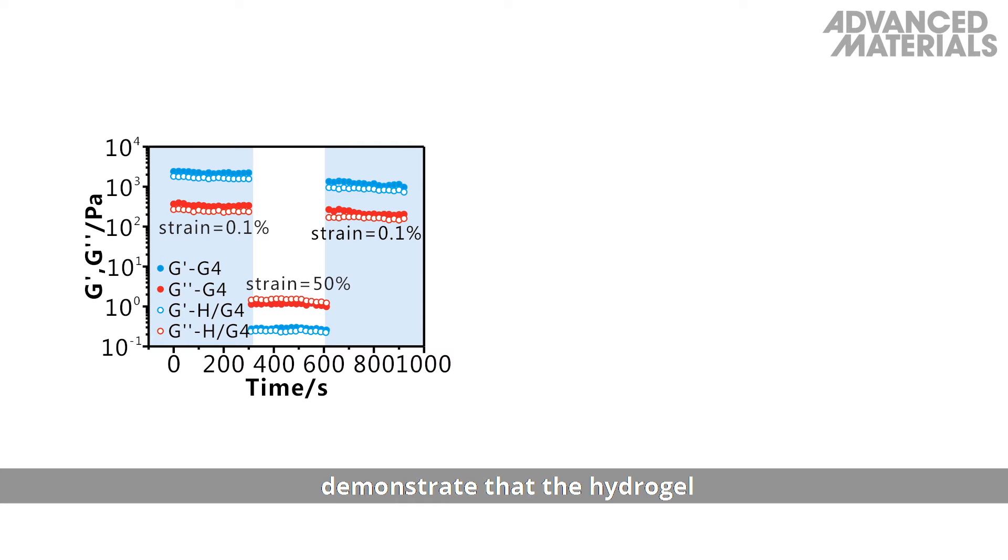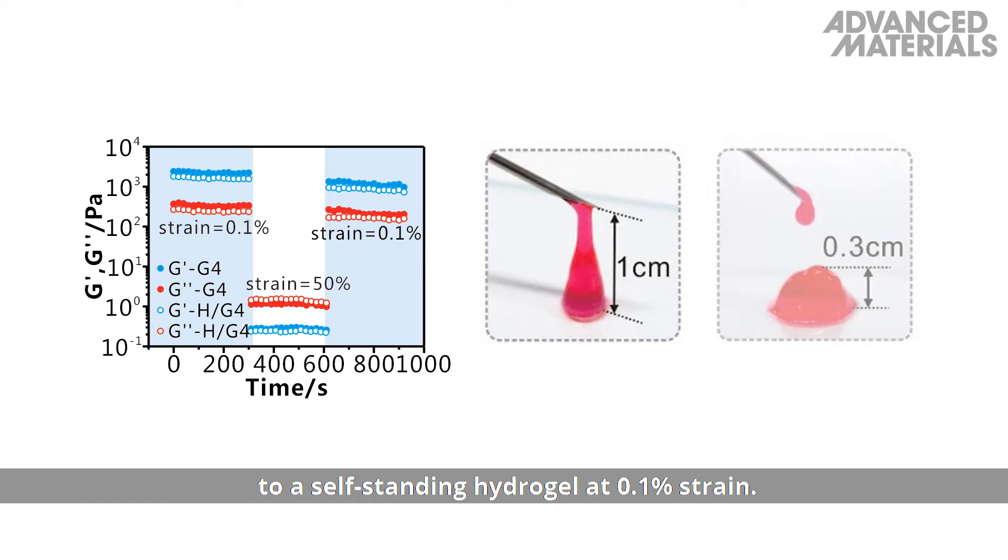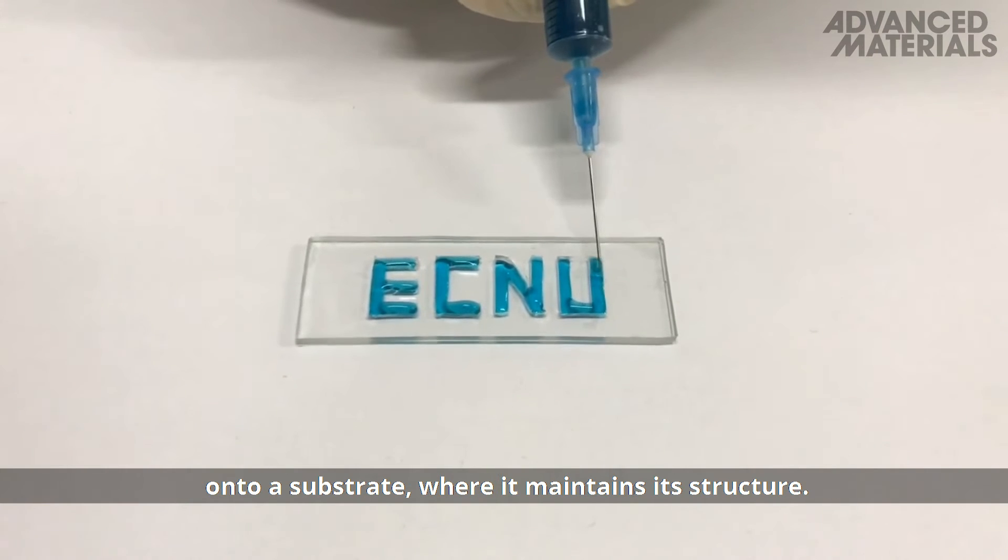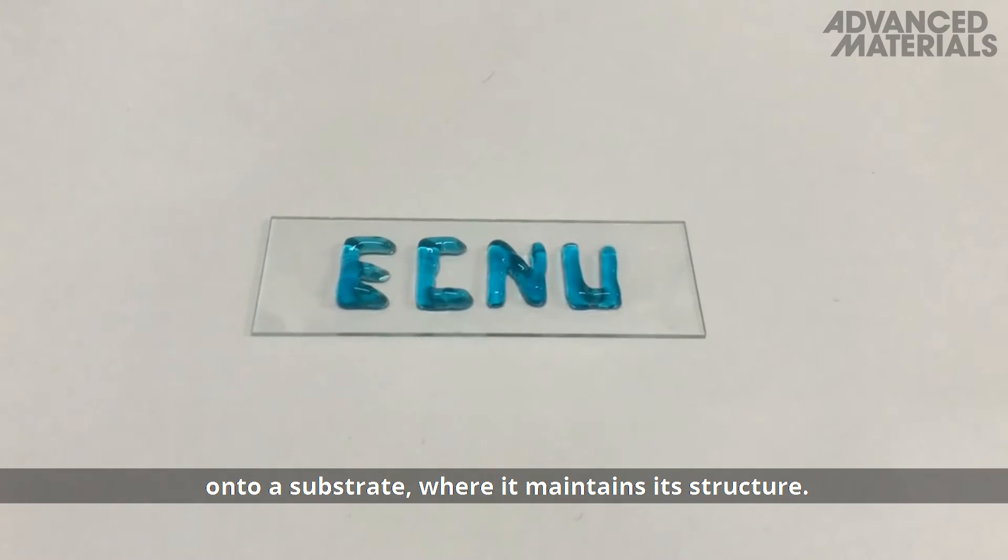Step-strain measurements demonstrate that the hydrogel could switch between a quasi-liquid state at 50% strain to a self-standing hydrogel at 0.1% strain. The hydrogel could therefore be injected through a needle onto a substrate where it maintains its structure.